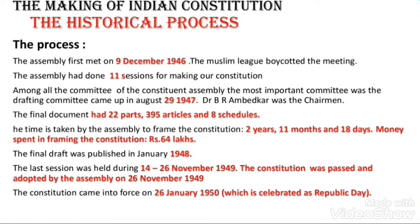There is a lot of credit to the Drafting Committee, which prepared the draft of the Constitution and is why we have a final constitution. The final document had 22 parts, 395 articles, and 8 schedules. It took 2 years, 11 months, and 18 days for the Constitution to be completed.